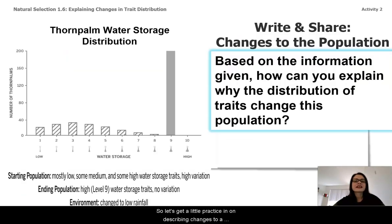Let's get a little practice in on describing changes to a population. We're going to be considering the thorn palm water storage traits, and we're going to try to describe why the distribution of traits change in this population. Spend a moment looking at the histogram.